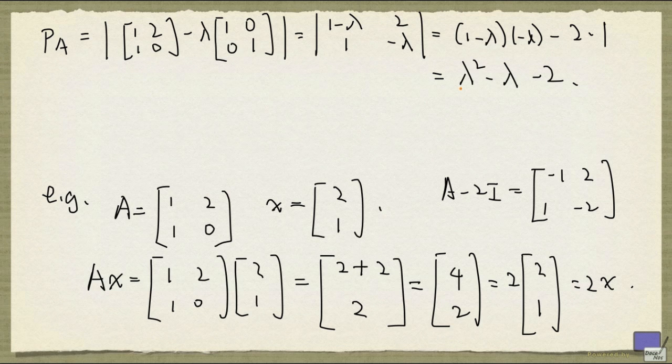Clearly, if lambda is equal to 2, this is 0. Now, there's also another root. If you set lambda equal to minus 1, you also get 0. So minus 1 squared is 1, minus minus 1 is plus 1, so that's 2, 2 minus 2 is 0. So minus 1 is also an eigenvalue.